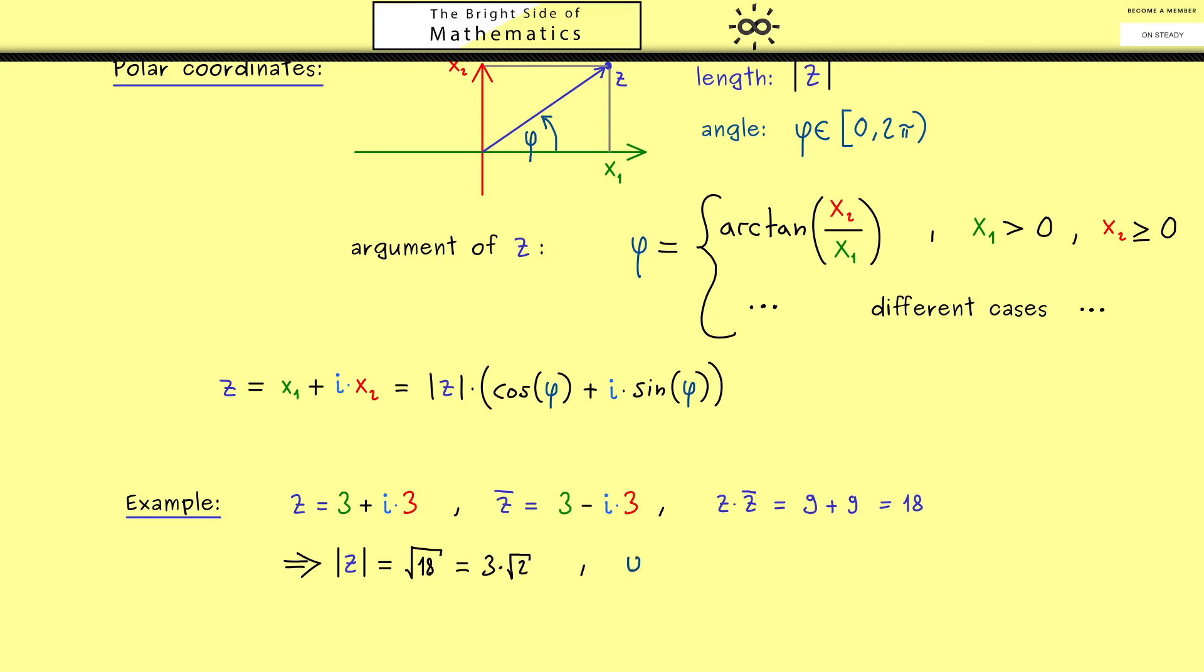Okay then the next step would be calculating the argument φ. Using the formula from above this would mean we divide 3 by 3 and then we take the arctan of it. However if you draw a sketch you might already see we have exactly 45 degrees as the angle. Or in other words we get π over 4. Okay with this we have everything and we can write z in polar coordinates. So we have 3 times square root of 2 times cos of π over 4 plus i sin of π over 4. And indeed that's all we had to do here.